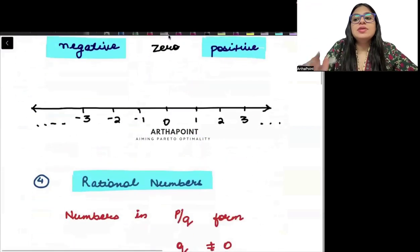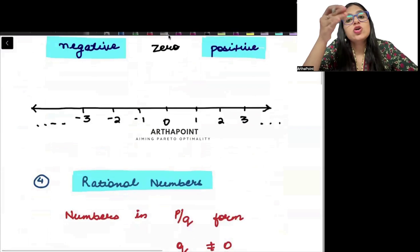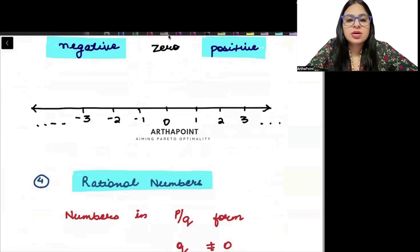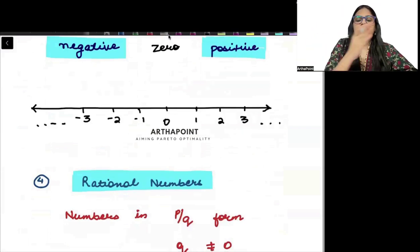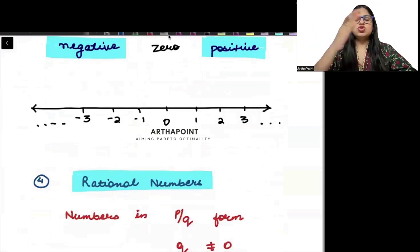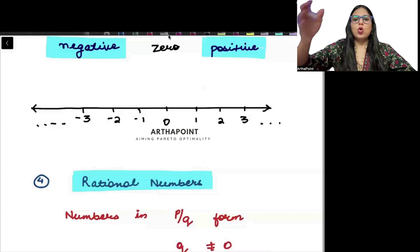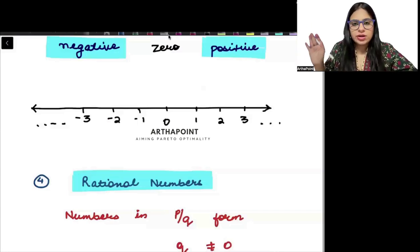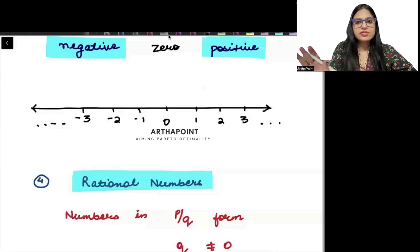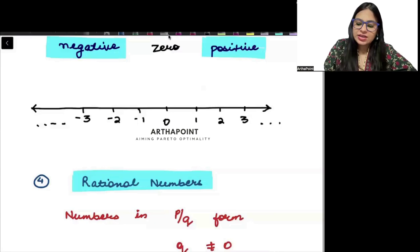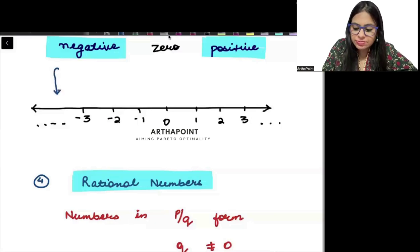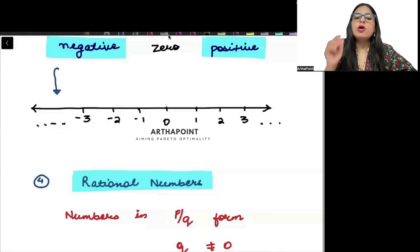Integers can be represented on a number line. I can write it on a number line: minus 3, minus 2, minus 1, 0, 1, 2, 3, 4 and so on. When I represent it on a number line, then this will be the representation of integers.